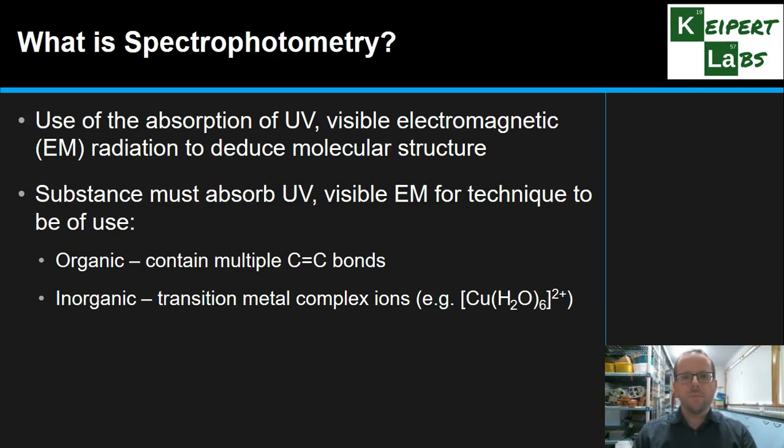So what is spectrophotometry? Essentially we're talking about the use of the absorption of UV or visible electromagnetic radiation to help deduce or understand more about molecular structure. So we're not trying to identify elements, we're trying to understand more about the actual structure of a given molecule. So in order for it to be of any use, the substance that we're trying to test for has to either absorb UV or visible electromagnetic radiation. So organic compounds, we're talking about molecules that contain multiple carbon-carbon double bonds. And inorganic or ionic compounds, we're talking about transition metal complex ions, such as this complex ion that copper forms with a water molecule.